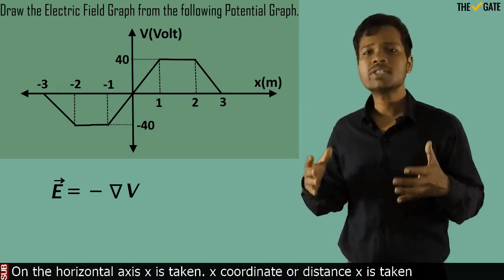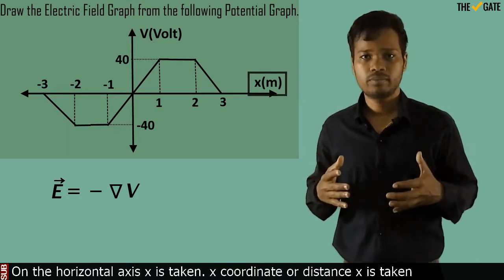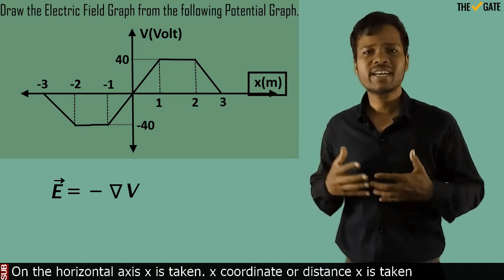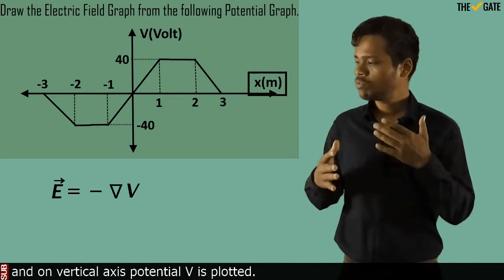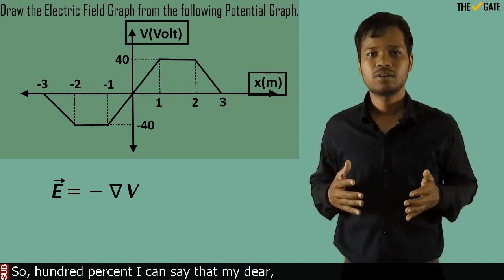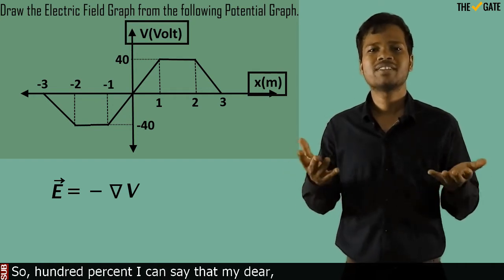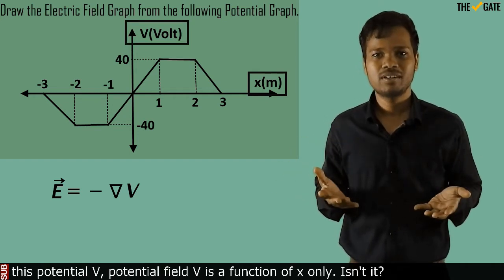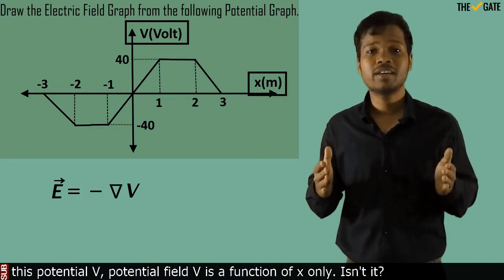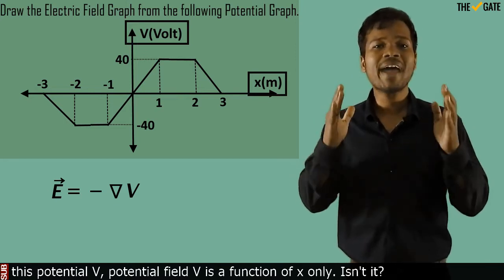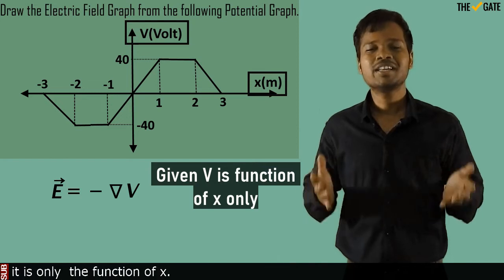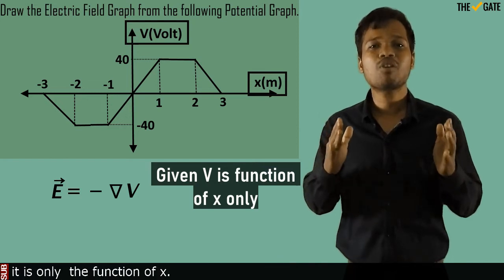On the horizontal axis, x coordinate or distance x is taken. And on the vertical axis, potential V is plotted. So, I can say 100% that this potential field V is a function of x only — it is only the function of x.